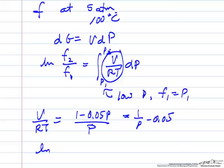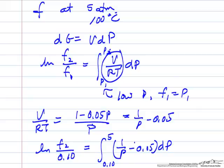We can substitute back in log of fugacity 2. Fugacity 1 is going to be the same as the pressure, so we know 1 atmosphere. This is integral from 0.01 to final pressure of 5, and we're going to integrate 1 over pressure minus 0.05 dP.